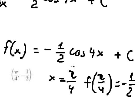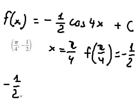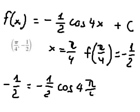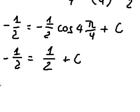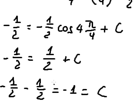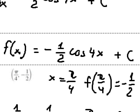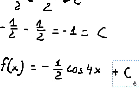So I will put π over 4 in here. We get 1 over 2, and I move it to the left — negative 1 over 2 minus negative 1 over 2 gives us negative 1. And that's the value of C. Now we return back and put C equals negative 1 in. This is the final answer. This is the end — thank you for watching.